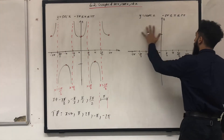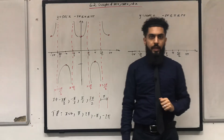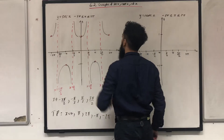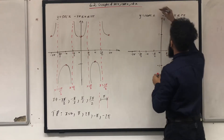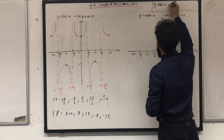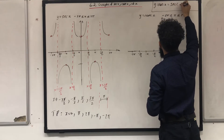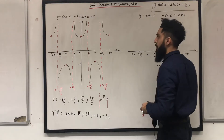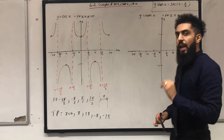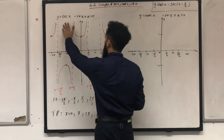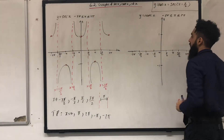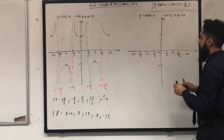Now let's move on to the graph of y = cosec x. Y = cosec x is related to y = sec x in the following way: y = cosec x is equivalent to sec(x minus π/2). So to sketch y = cosec x, you take the graph of y = sec x and shift it π/2 units to the right.